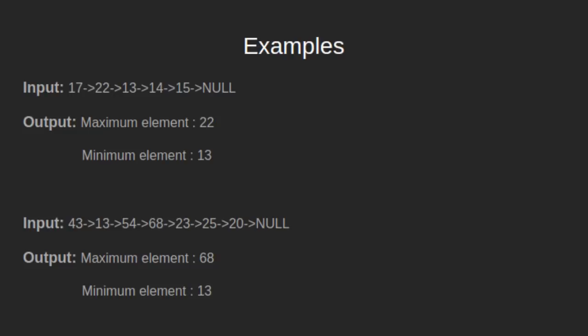Let's see some examples. In the first example, we have a linked list: 17, 22, 13, 14, 15, null. Here the maximum element is 22 and the minimum element is 13.